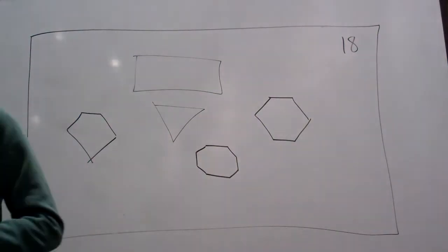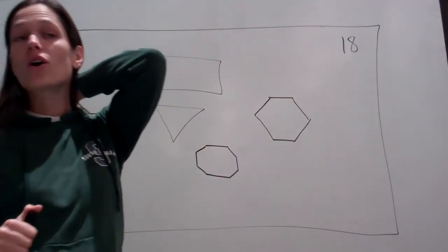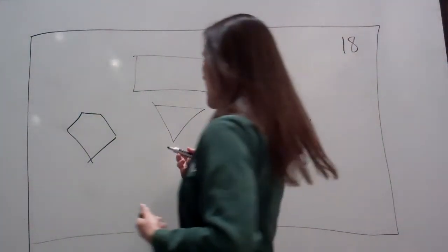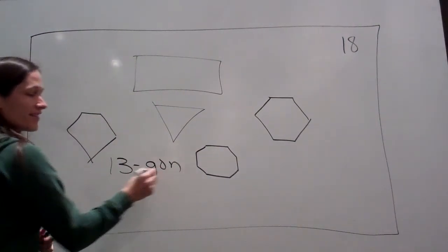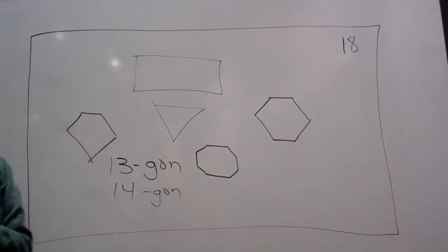Okay? Eleven, un-decagon. Okay? And twelve, do-decagon. And anything after that, if it has more than twelve sides, you will say thirteen-gon. Fourteen-gon. That's what you would say. Okay?